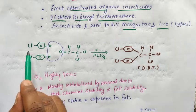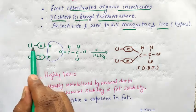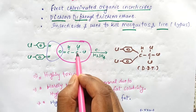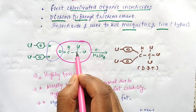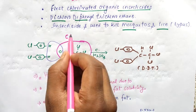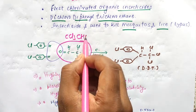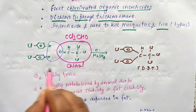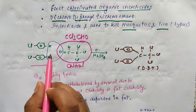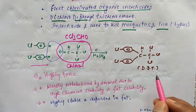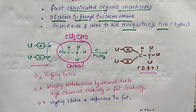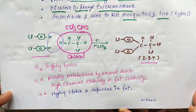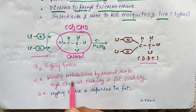Now, look at the structure. This is chlorobenzene. This compound reacts with chloral CCl3CHO to form DDT. This reaction is important - note it.